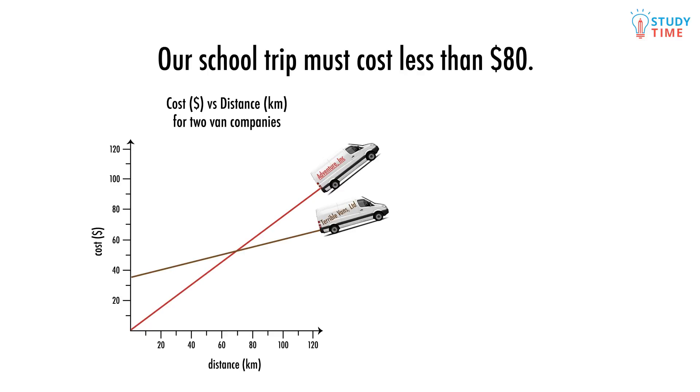We might want to know how much each company charges us per kilometre. Remember, this is calculated from our gradient using Rise Over Run. The first company charges 75 cents a kilometre, while Terrible Vans Limited charges 25 cents a kilometre. So this is the better choice, right? Maybe not.